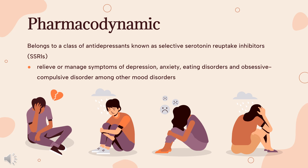In vitro studies show that fluvoxamine is a potent and selective inhibitor of neuronal serotonin reuptake and has only very weak effects on norepinephrine and dopamine neuronal reuptake. Moreover, apart from binding to sigma receptors, fluvoxamine has no significant affinity for adrenergic (alpha-1, alpha-2), beta-cholinergic, GABA, dopaminergic, histaminergic, serotonergic (5-HT1A, 5-HT1B, 5-HT2), or benzodiazepine receptors. Some studies have demonstrated that chronic administration of fluvoxamine was found to down-regulate brain norepinephrine receptors, as observed with other drugs effective in treating major depressive disorder, while others suggest the opposite.